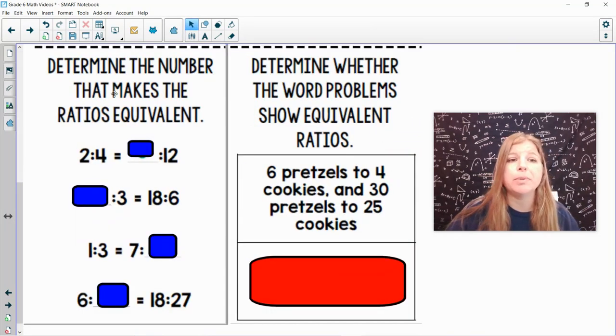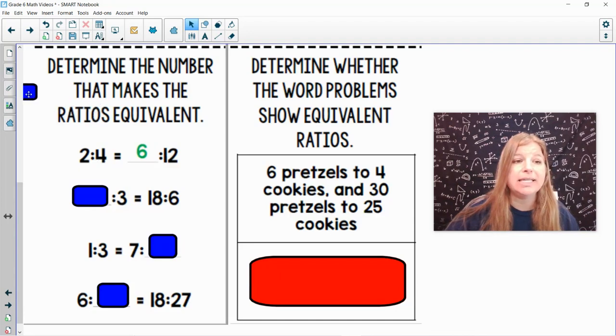The next skill, determine the number that makes the ratios equivalent. So now this is basically just filling in the blanks. 2 to 4 is equal to what to 12? 2 to 4 is 1 half. What's half of 12? Half of 12 is 6. Or you could say, how do I go from 4 to 12? Going from 4 to 12, I multiply by 3. So then I would do the same thing with the 2. 2 times 3 is 6.